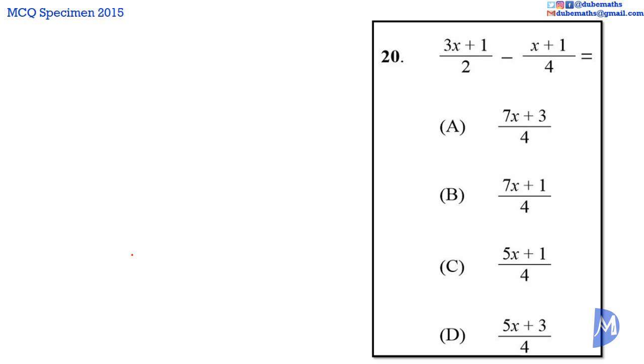Question 20. Adding algebraic fractions. To add fractions we express both over the same denominator and then we simplify by adding the numerators. The LCM of 2 and 4 is 4. The second fraction is already expressed over the LCM.